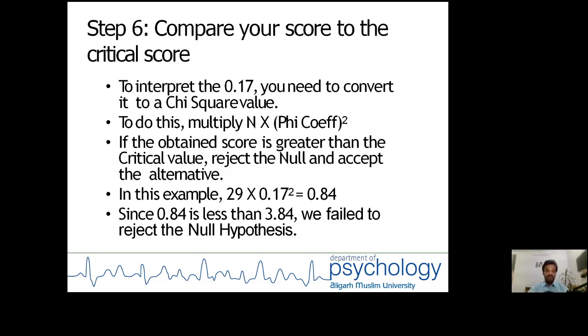The decision criteria is that if the obtained score is greater than the critical value, reject the null hypothesis and accept the alternate. Since 0.84 is less than 3.84, we fail to reject the null hypothesis.